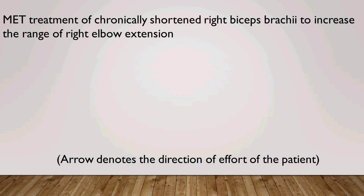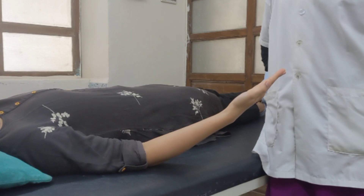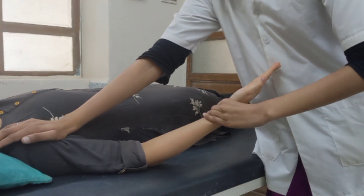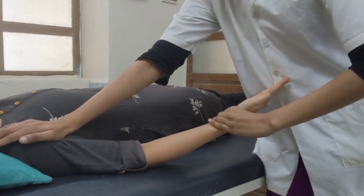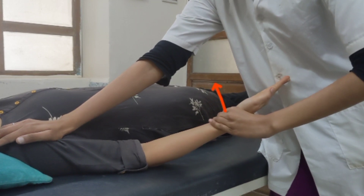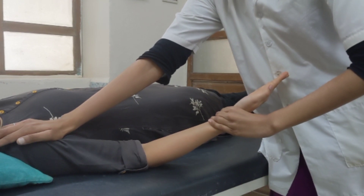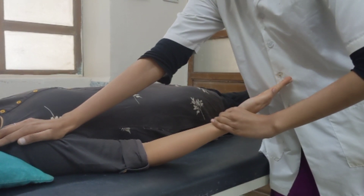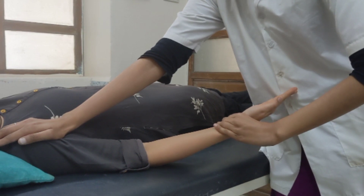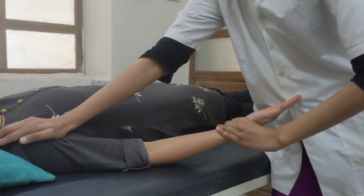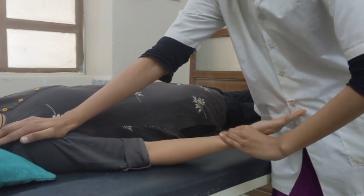MET treatment of chronically shortened right biceps brachii to increase the range of right elbow extension. Patient position: supine lying. Therapist position: standing beside the patient — one hand stabilizes the shoulder, second hand grasps the wrist. Therapist passively moves the elbow into extension at the new restriction barrier. Now ask the patient to introduce more than 20% and less than 35% effort of available strength. Hold for 5–7 seconds. Ask the patient to completely relax. Therapist passively moves the elbow into extension at the new restriction barrier. Repeat 2 more times. Then ask the patient to completely relax and therapist passively stretches the biceps in elbow extension and holds for 30 seconds. Dose: 3 repetitions, 1 set.